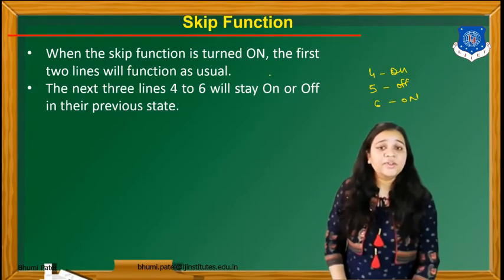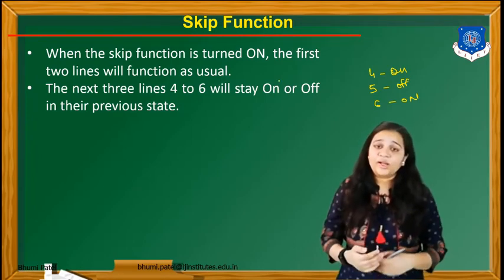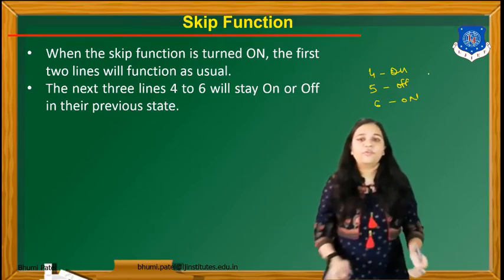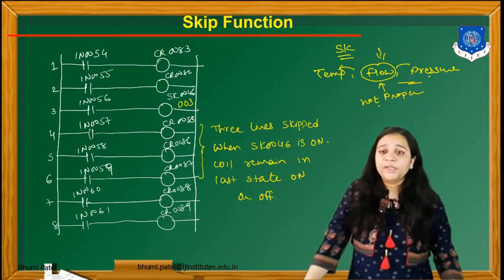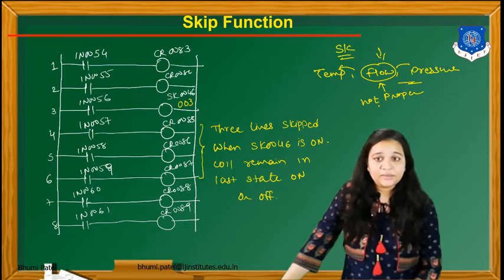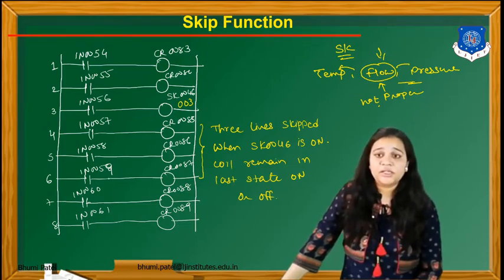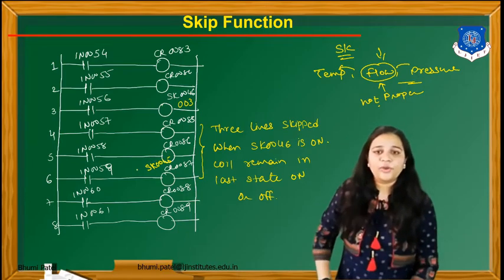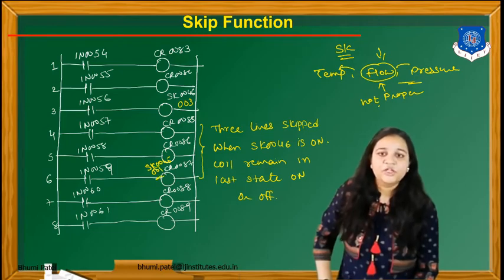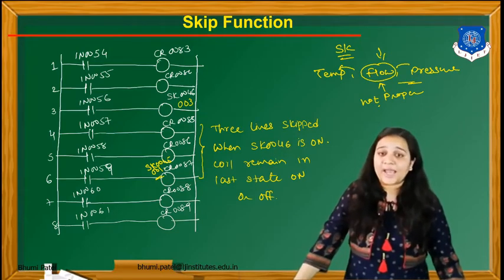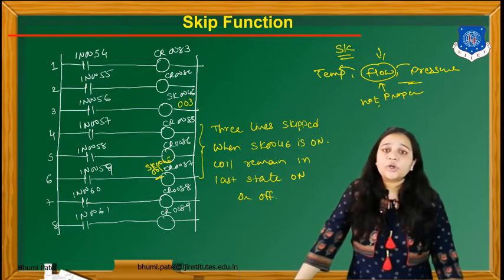After the skip function is executed, the main program will run as usual, and then we have to change the state of lines 4, 5, and 6. Suppose we have to skip line number 7 for this particular program — we write the skip command in the previous rung, which is rung number 6. We write skip 0045 and the number 001, meaning we skip only one line. The number in the skip command is important — writing 003 or 001 determines how many lines are skipped.